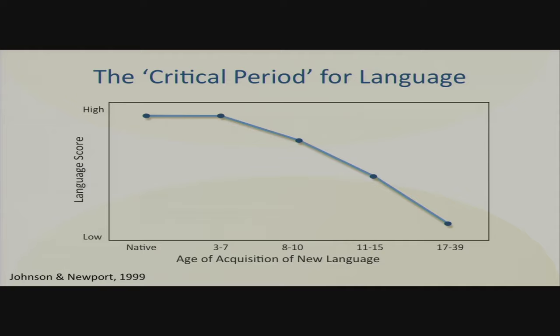Between zero and seven — and this is a cartoonish representation, but across many studies — children show an amazing capability to acquire a second language simply by living in the environment in which that language is spoken. Every two years after the age of seven, your ability changes, and after puberty it dramatically changes. It doesn't mean you can't learn a second language, but you don't seem to use the same implicit learning mechanisms and your skill level will never be the same.